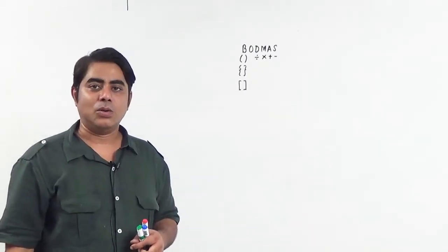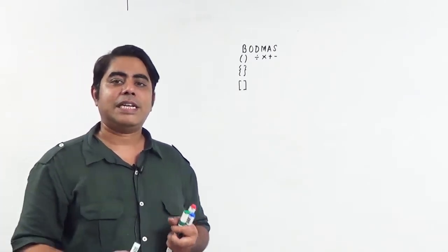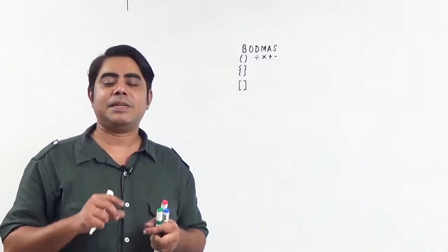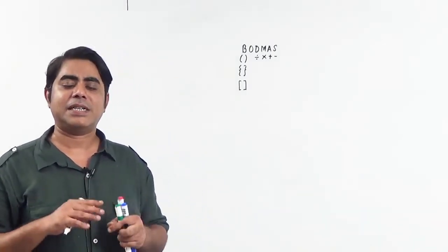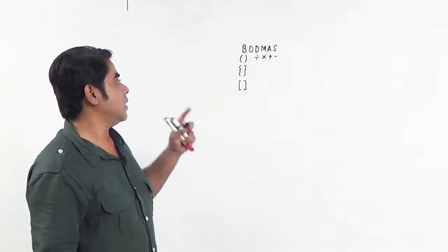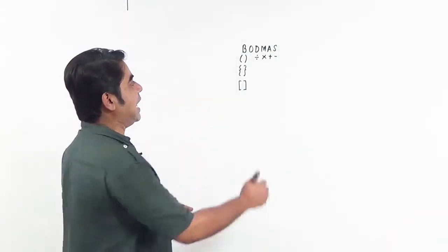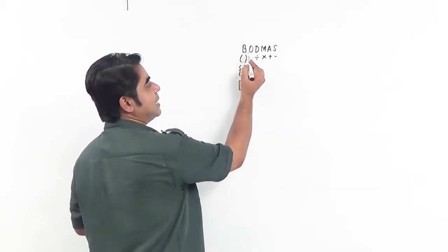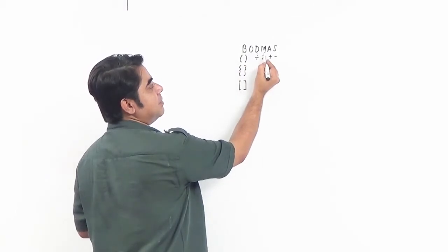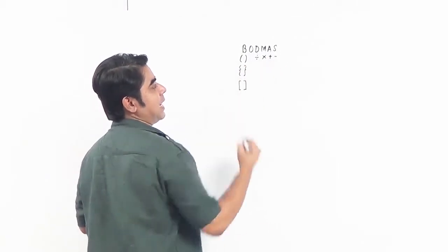Now we will be discussing a rule to evaluate expressions which contain addition, multiplication, subtraction, everything together. The rule is called the BODMAS rule. It stands for Bracket, Of, Division, Multiplication, Addition, Subtraction.